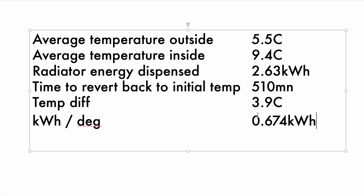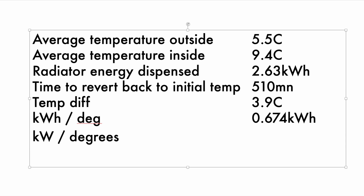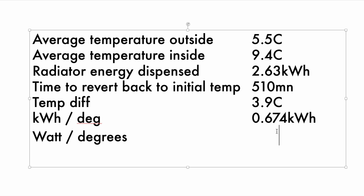Now, very importantly, we want to know the loss in terms of actual power — what would be the stable radiator power that would compensate for the losses? That's 0.674 kilowatt hours divided by 510 minutes expressed in hours, giving us kilowatt hours per hour. We're expressing this in watts rather than kilowatts.